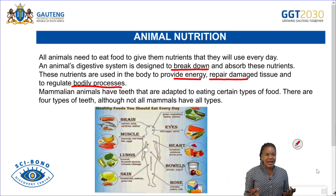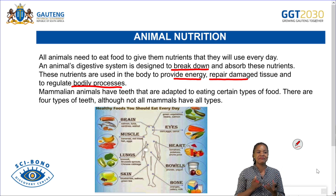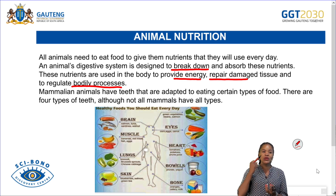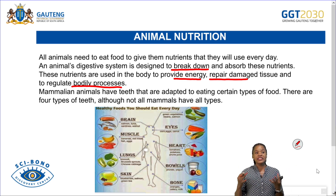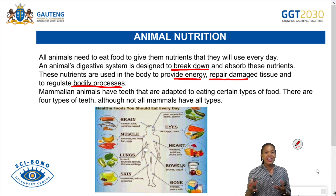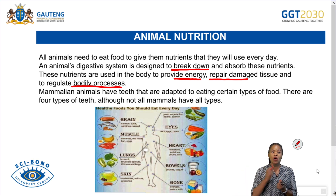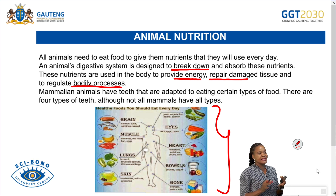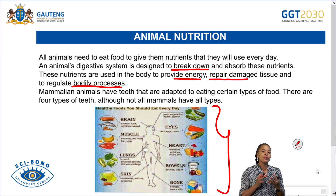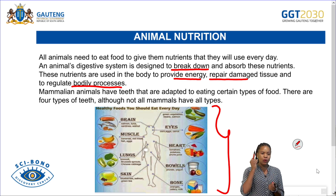All mammalian animals have teeth adapted to eat certain types of food, and there are four different types of teeth. Not all mammals have the full set. This picture shows a balanced diet — a diet that has all the correct proportions of nutrients.